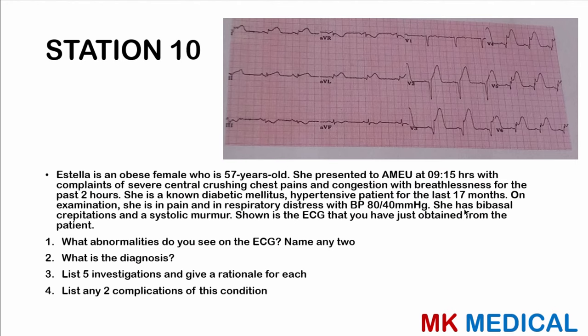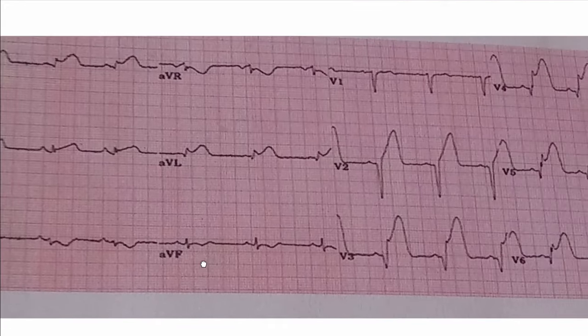The last and final station — I decided to answer this live on video with no pre-typed answer; we'll go through this together. Estelle is an obese 57-year-old female who presents at 09:15 with complaints of severe central crushing chest pains and breathlessness for the past two hours. She is non-diabetic, a hypertensive patient for the last 17 months. On examination she is in pain and respiratory distress with BP 80/40, bilateral crepitations, and a systolic murmur. Shown is the ECG obtained from the patient.